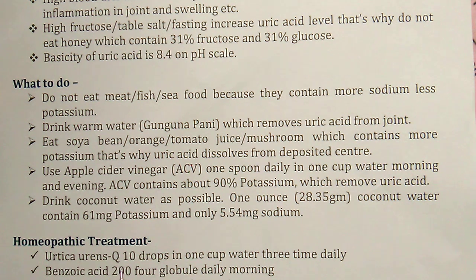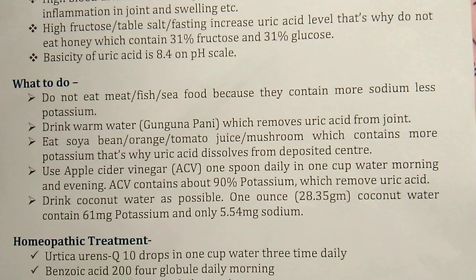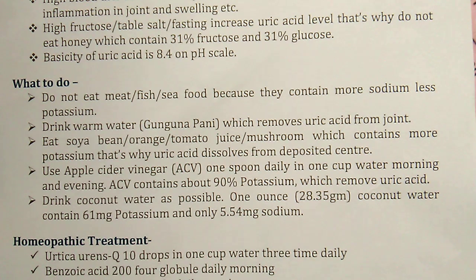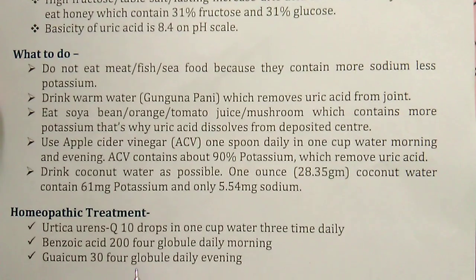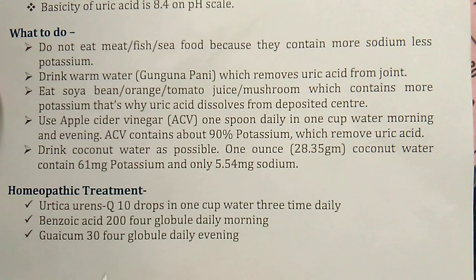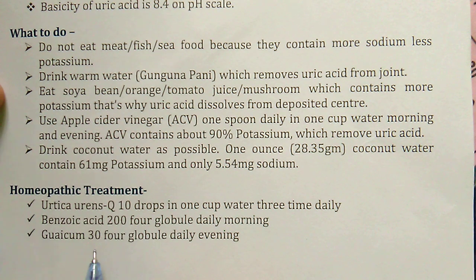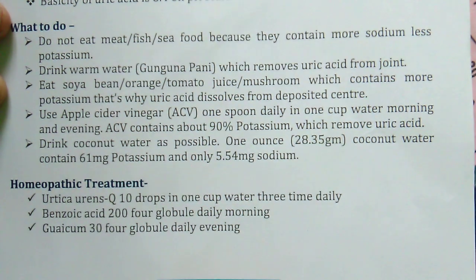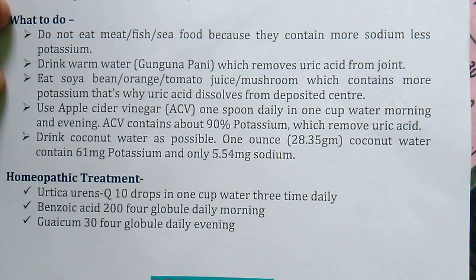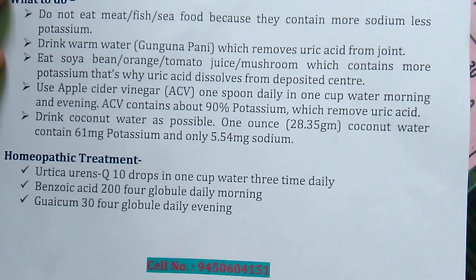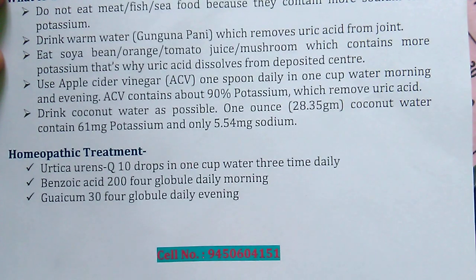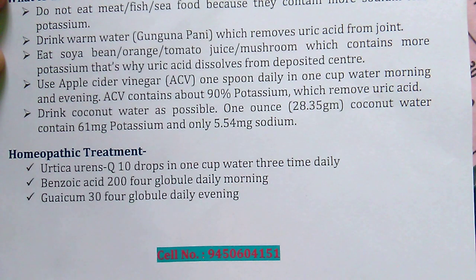For homeopathic treatment: Urtica urens Q (mother tincture), 10 drops in one cup of water, three times daily — this removes uric acid. Additionally, benzoic acid 200, 4 globules daily in the morning, and Guaiacum 30, 4 globules daily in the evening. In this way you can remove uric acid from the body.